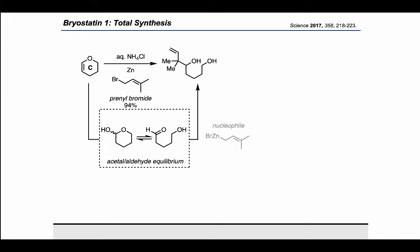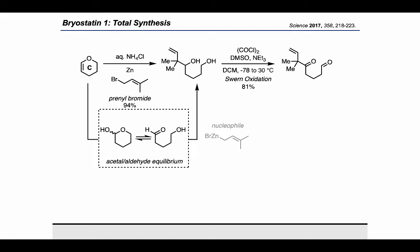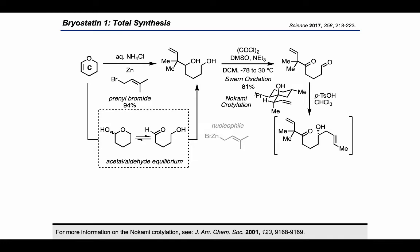That racemic diol is subjected to a Swern oxidation using oxalyl chloride, DMSO, and triethylamine in order to do a double oxidation on both the secondary and primary alcohol. Then, by applying a crotylation procedure using a menthone-derived crotyl transfer reagent developed by Nokami, the authors achieved an enantioselective addition to the aldehyde. Finally, treatment with 4-Å molecular sieves resulted in the reformation of the C-ring through a dehydrative cyclization.